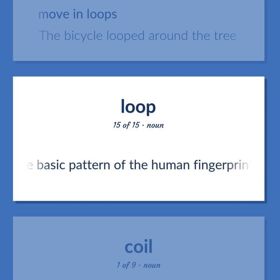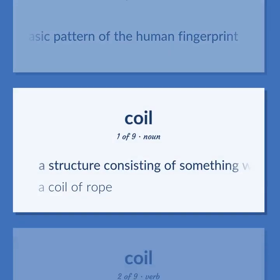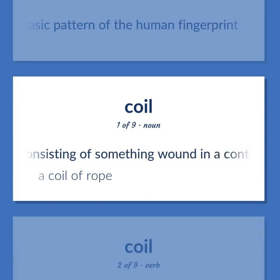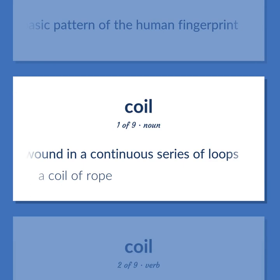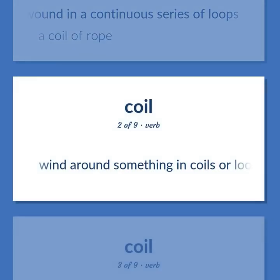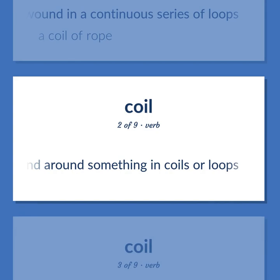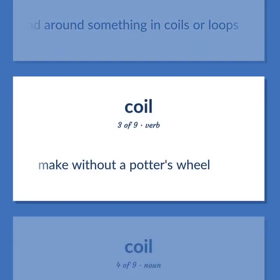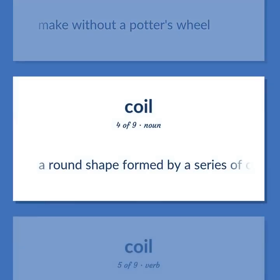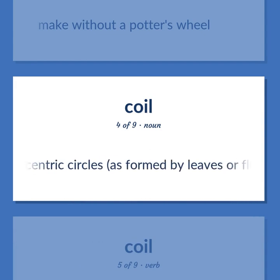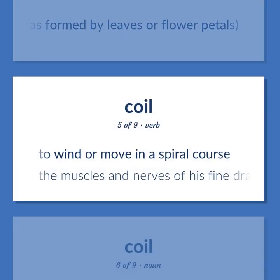The basic pattern of the human fingerprint. COIL: A structure consisting of something wound in a continuous series of loops — 'A coil of rope.' Wind around something in coils or loops. Make without a potter's wheel. A round shape formed by a series of concentric circles, as formed by leaves or flower petals. To wind or move in a spiral course — 'The muscles and nerves of his fine-drawn body were coiling for action.'